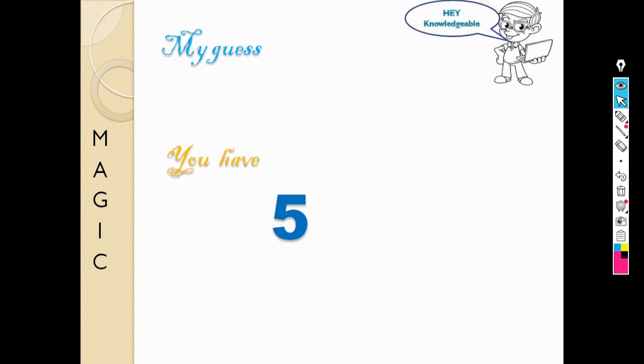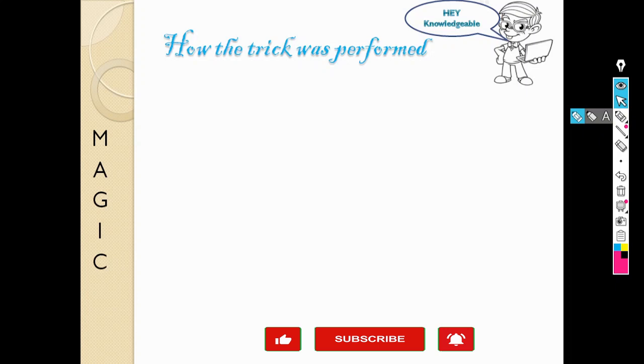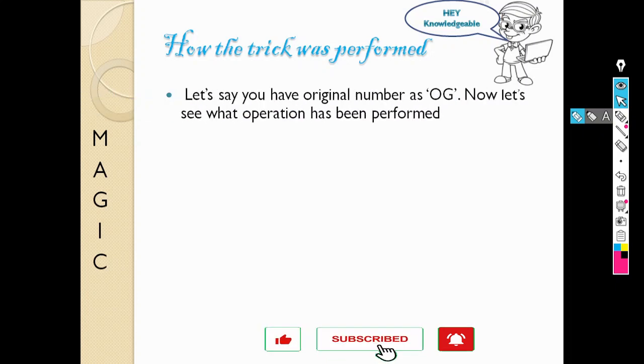In the next slide I will share what was the trick. Let's see how the trick was performed. Let's say you have original number as OG. Now let's see what operation has been performed.